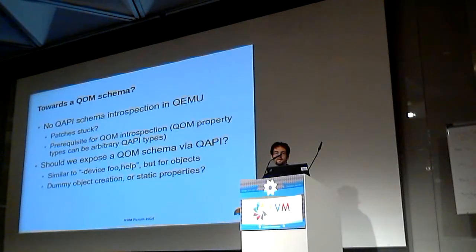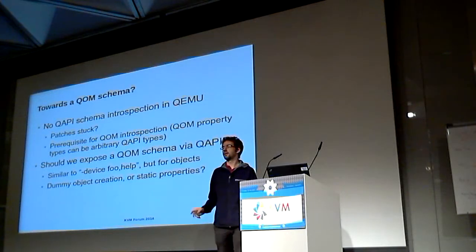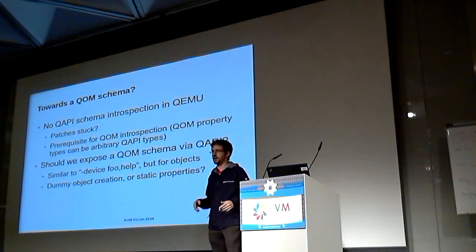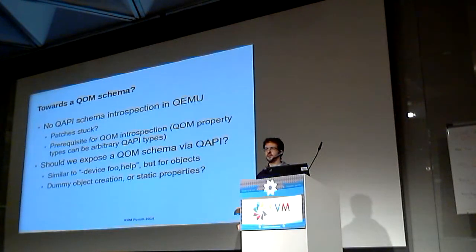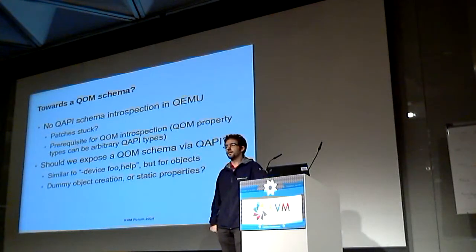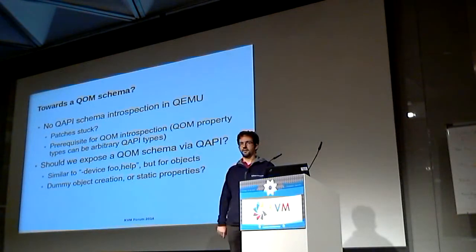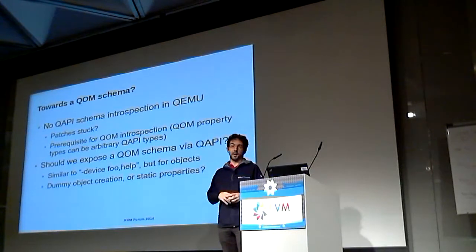Once you have QAPI introspection, the question is whether we should have a QAPI command that lets us expose to management the full QOM schema — something that replaces the ad hoc solutions we have now, like listing the properties of a device with minus device something comma help, but generalized to all kinds of objects. We may also have to decide whether it's time to have real static properties for QOM instead of just instance-side properties. The predecessor QDev used to have static properties, and they actually still are there in the internals of the QOM device class — might as well take that, make it more similar to the rest of the QAPI API, and generalize it.